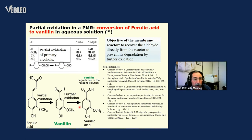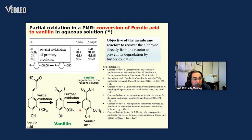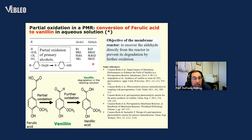Another example is the conversion of ferulic acid to vanillin using partial oxidation. As in the case before, the product vanillin can be further oxidized to vanillic acid and destroyed, so it is important to extract vanillin from the reaction environment. Cameraro and others used a pervaporation membrane in this case and obtained good results.